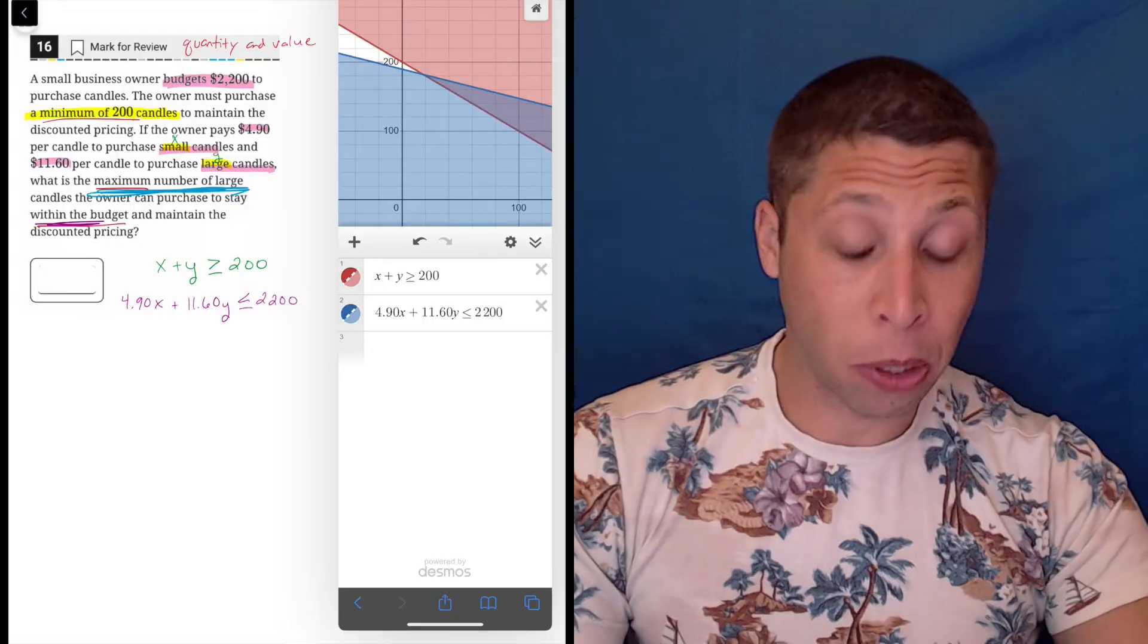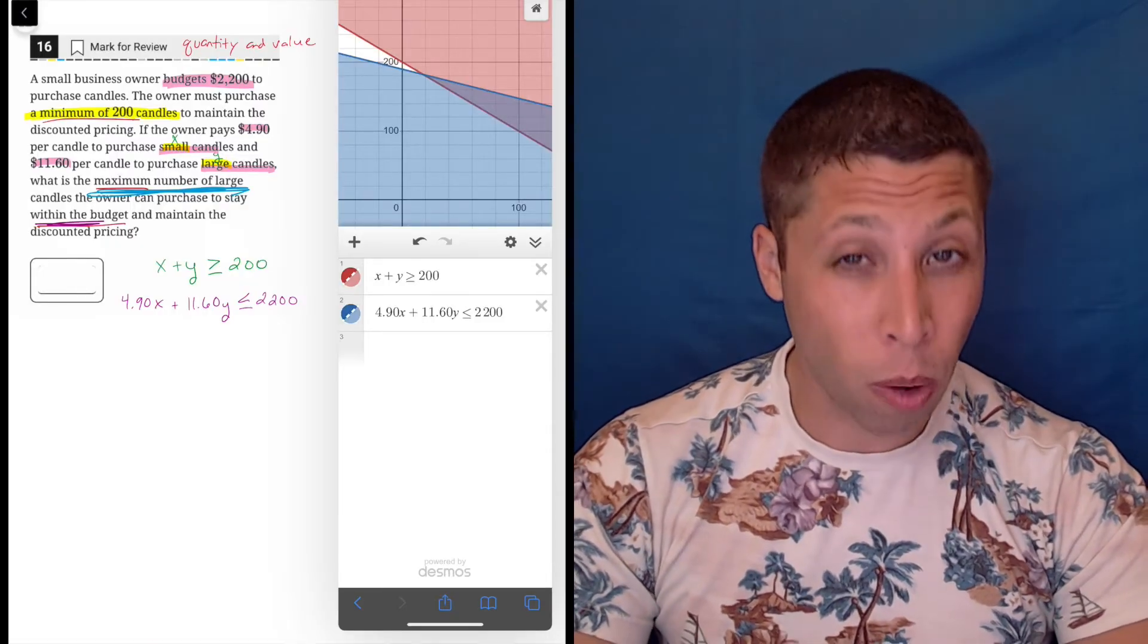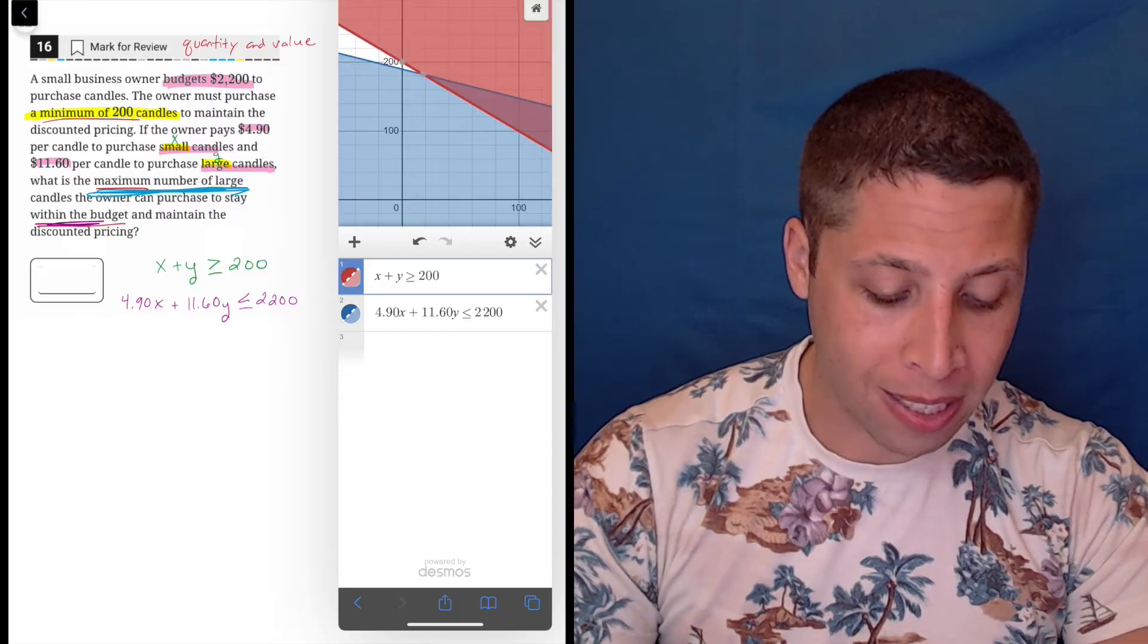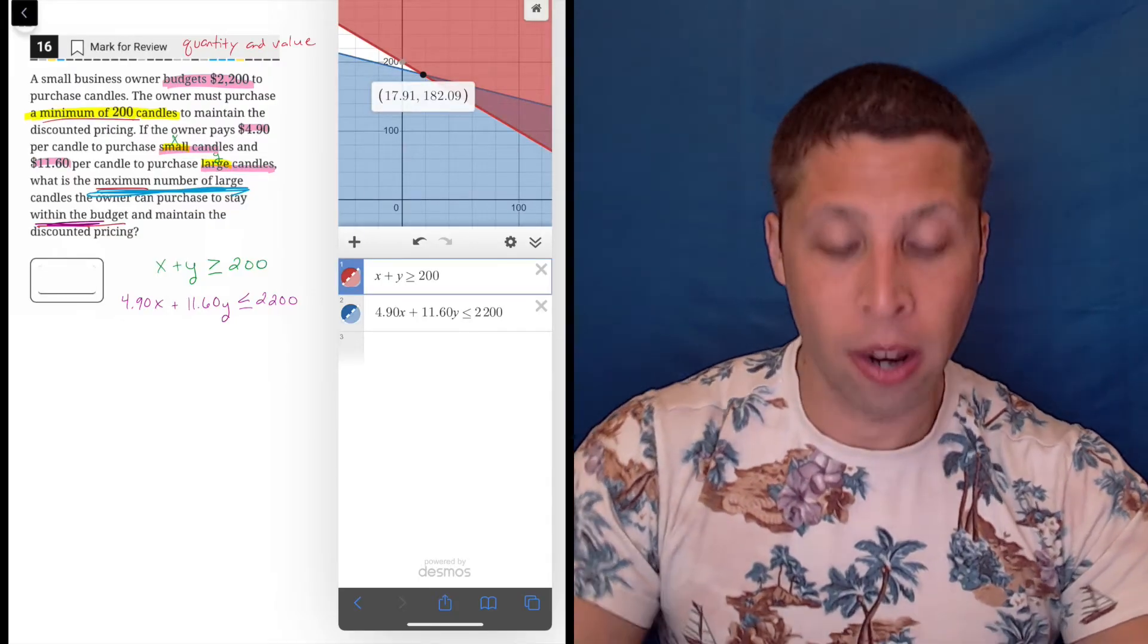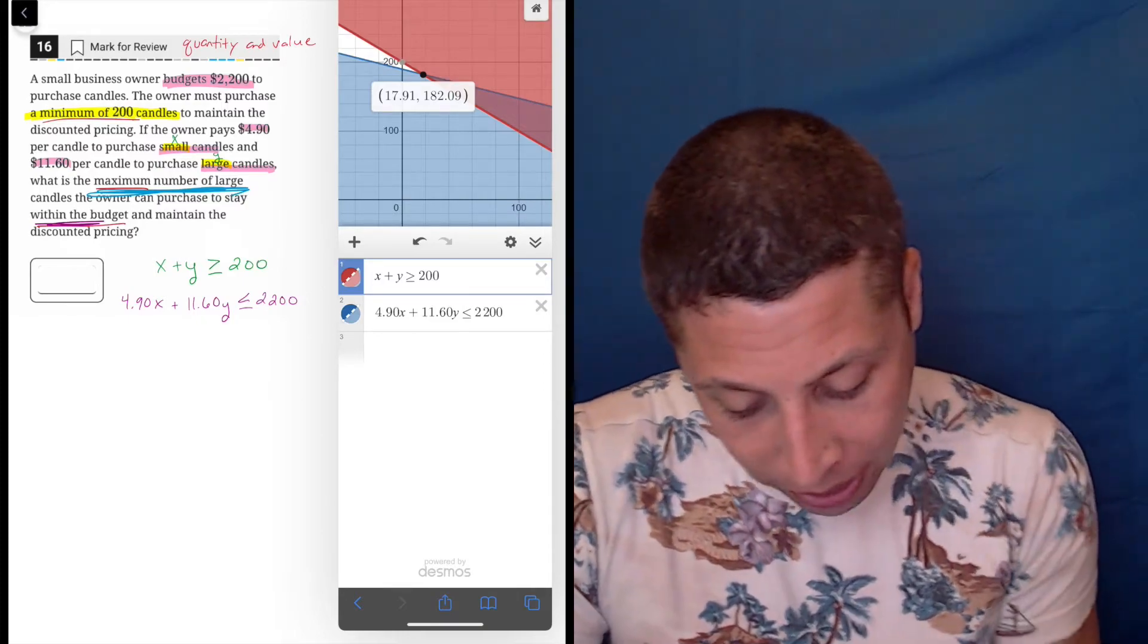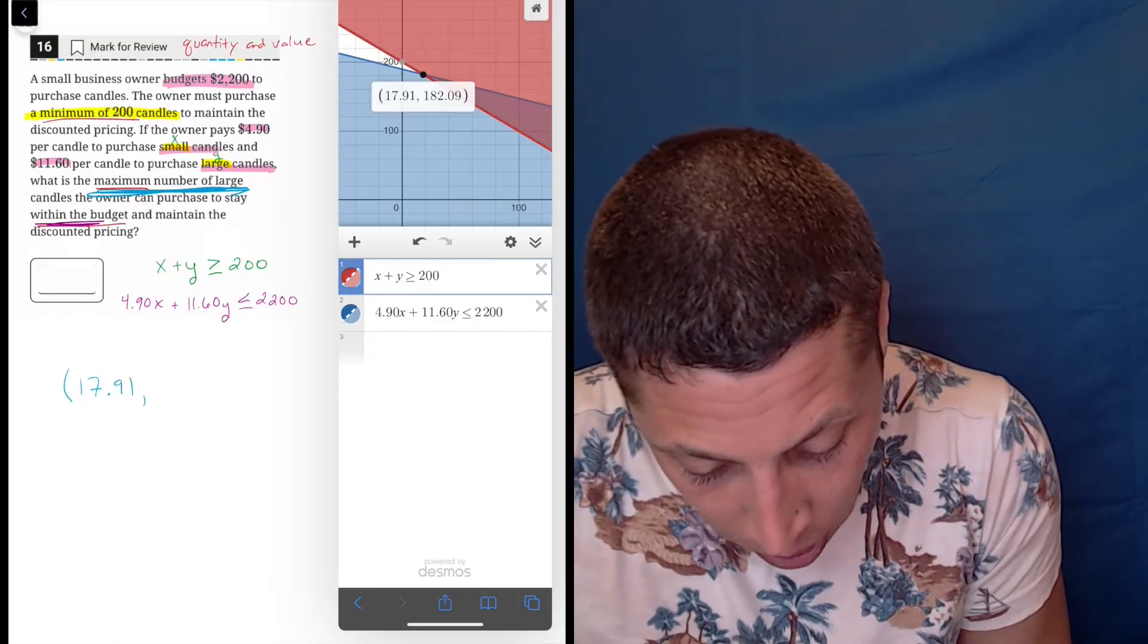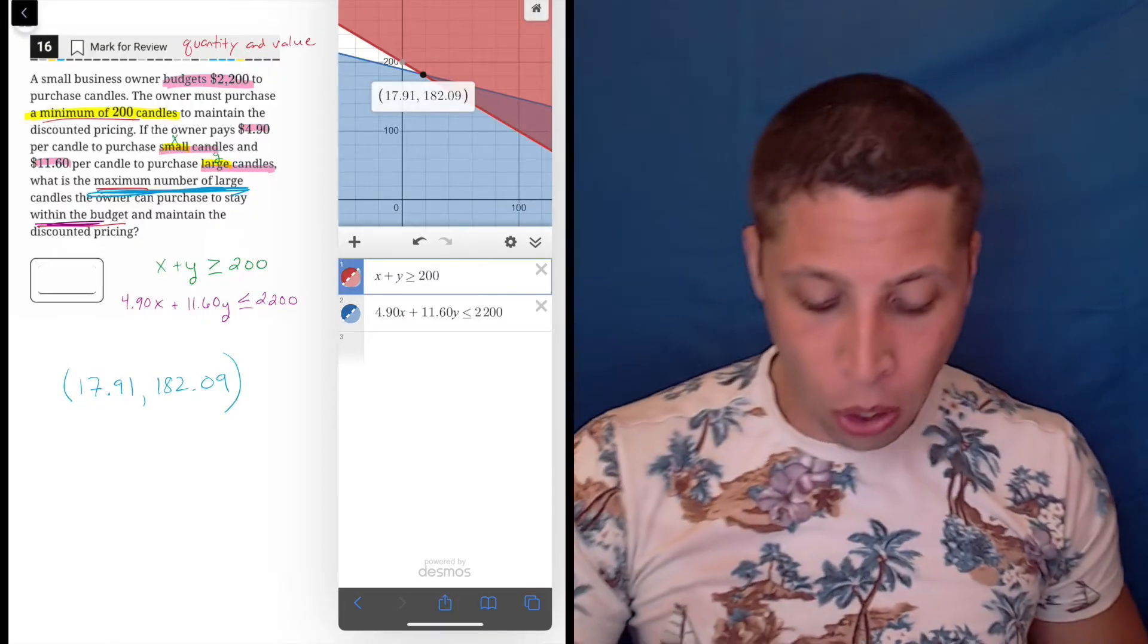So again, because of my experience with SATs, I know that when we're talking about maximums and minimums and we have inequalities, we're talking about that spot right there where the two intersect. Okay. That's where things happen, right? The maximums happen. So I'm going to write that point down. 17.91, 182.09.